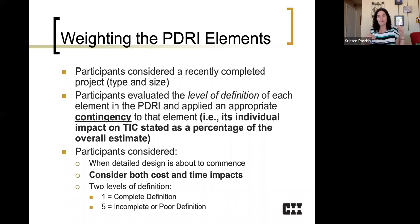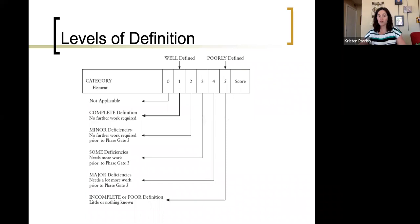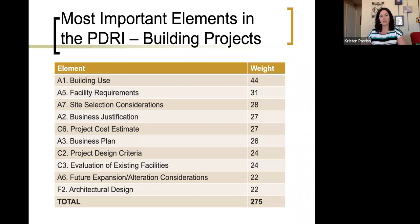So these levels of definition are obviously critical in this process, therefore it's important to understand exactly the guidance that we provide to people. So we would say a level one or definition level one means you have complete definition, there's no further work required. You could also have some deficiencies, so more work would be required prior to stage gate three, which is that stage gate right before detailed design and construction that we looked at earlier. Or you might have incomplete or poor definition, you know very little about this element and that would be of course definition level five.